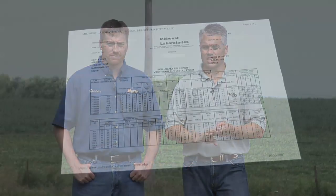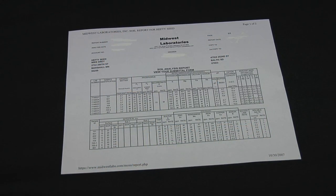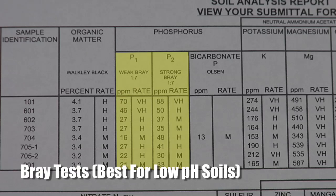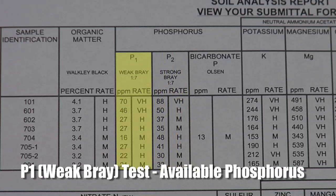On a soil test there are three different tests that you can get to tell you how much phosphorus you really have out there. In low pH soils we believe the Bray tests are a little more accurate measure. There is a weak Bray test and a strong Bray test. The weak Bray is also called the P1, and that tells you available phosphorus — it's a little bit more accurate in lower pH soils.